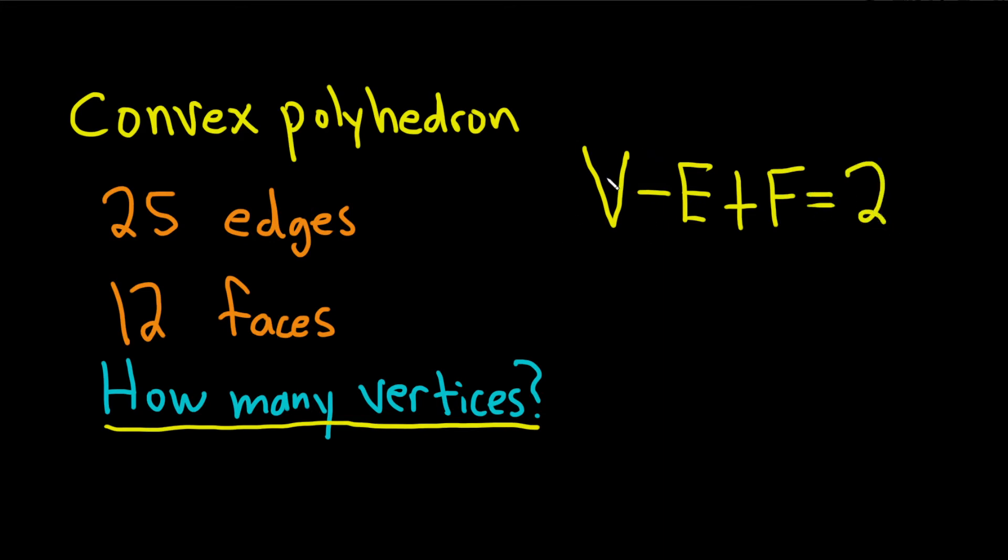So in this problem we're looking for V, which is the vertices. We know E is going to be 25, that's our edges, and we know F is going to be 12, that's our faces.